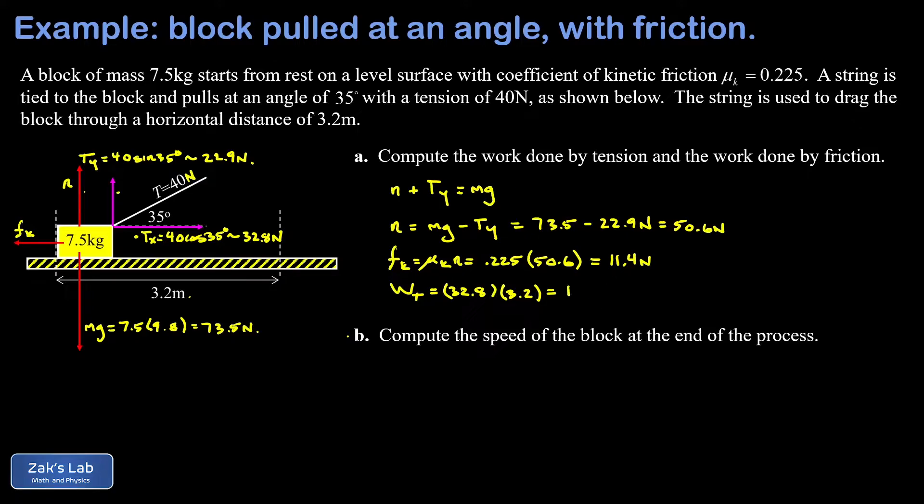To three significant digits I get 105 joules of work. Now to get the work done by friction, there's only one minor complication: the friction force points opposite the direction of the displacement vector, which means we get a minus sign out of the work. The magnitude of my friction force was 11.4, the displacement again was 3.2 meters.